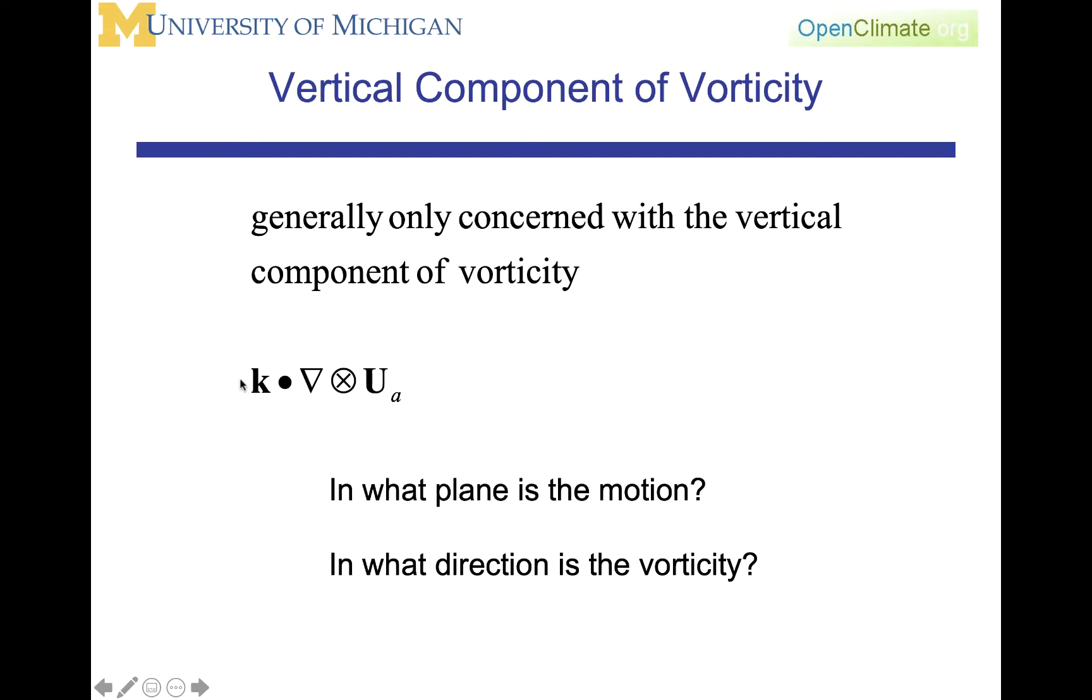Using our vector notation, we would get this component by taking the dot product with the unit vector in the vertical direction. Hence, we are looking at k dot del cross u. In what plane is the motion? The xy plane. In what direction is the vorticity? The vertical.